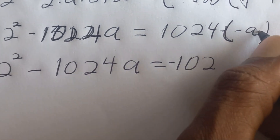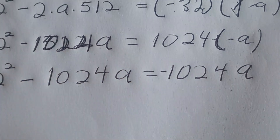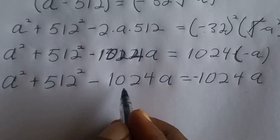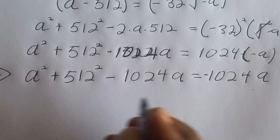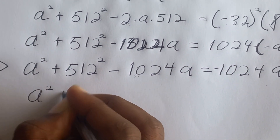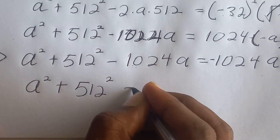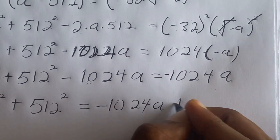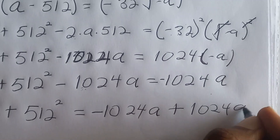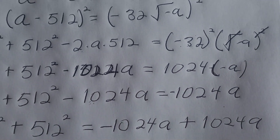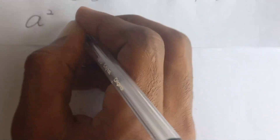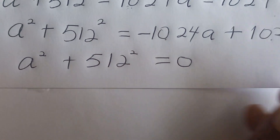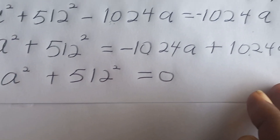Sending the 1024a terms to one side: a squared plus 512 squared minus 1024a minus 1024a equals 0. So a squared plus 512 squared equals 0, because the 1024a terms sum to zero and cancel out.